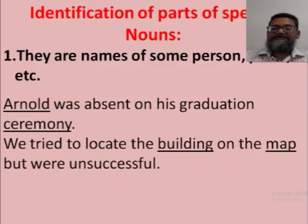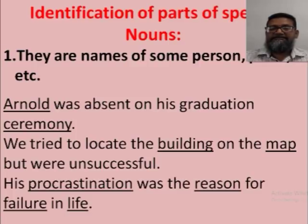In another example: 'We tried to locate the building on the map, but were unsuccessful.' Building is the name of a structure, and map is also a name of something we use to locate things — so both are nouns. 'His procrastination was the reason for failure in life.' All four words — procrastination, reason, failure, and life — are nouns.